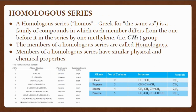A homologous series — 'homos' meaning Greek for 'the same as' — is a family of compounds in which each member differs from the one before it in the series by one methylene, that is a CH₂ group. The members of a homologous series are called homologs. The members of a homologous series have similar physical and chemical properties. Given below is the homologous series for alkanes and alkenes.